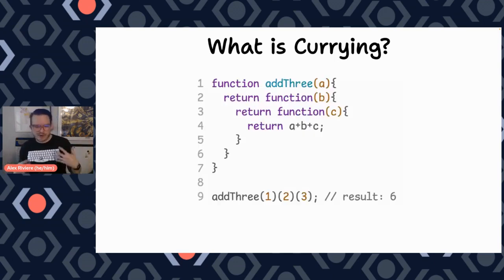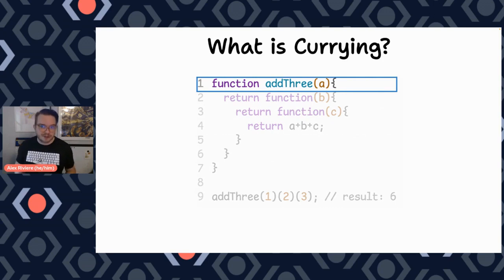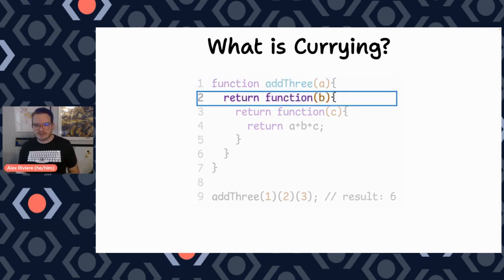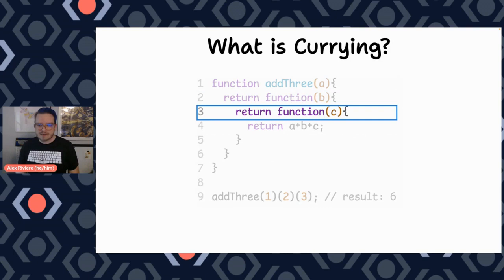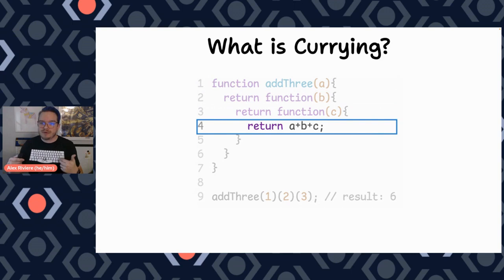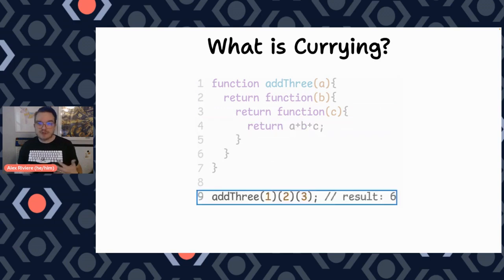So in JavaScript, what we would do to write a currying function is we would make a parent function that takes in an argument — we'll say 'a' in this case. And that parent function is going to return a mid function that takes an argument of 'b'. And then that mid function is going to return another function that takes an argument of 'c', and that function, when it gets called, will be able to access a, b, and c and add them all together. So to use it, you would say add(1)(2)(3) and it will give you a result of six.